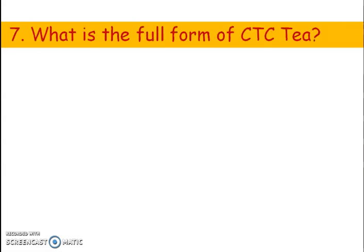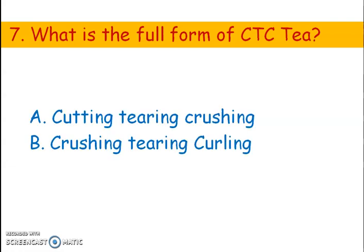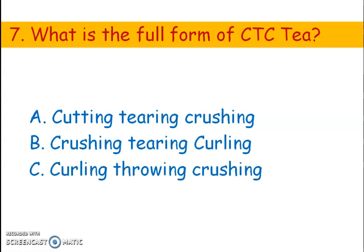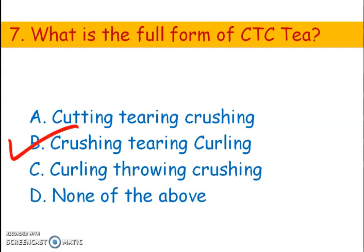Next question. What is the full form of CTC? Options: A) Cutting, tearing, crushing; B) Crushing, tearing, curling; C) Curling, throwing, crushing. The right answer is option B — Crushing, Tearing, Curling. CTC is a tea manufacturing method. The tea produced by CTC machinery is fine and granular.